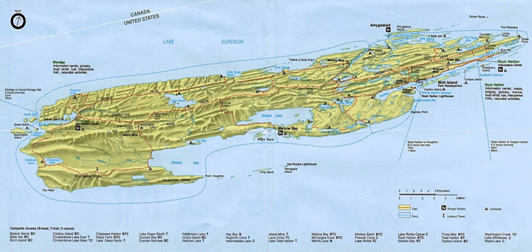At 206.7 square miles, Isle Royale is the third-largest island in the contiguous United States after Long Island and Padre Island. The island and the surrounding islands and waters make up Isle Royale National Park, for a total area of 209 square miles of above-water territory.